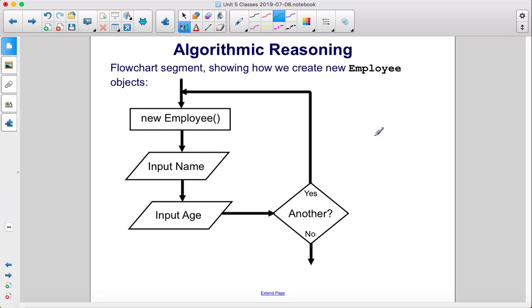Flowchart segment showing how we create new employee objects. Alright, so if we want to create a new employee from the employee class, we're going to need a name and an age. After we do that, if we want to create another employee, we go back to the beginning and do it again.